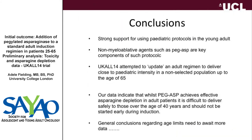In conclusion, there's clearly very strong support for using paediatric protocols in young adults. Non-myeloablative agents such as pegylated asparaginase are key components of those protocols. In UCAL-14, we attempted to update our protocol to deliver a paediatric-style regimen to a non-selected adult population up to age 65. Our data show that although pegylated asparaginase achieves effective asparagine depletion, it's very difficult to deliver safely over the age of 40 years, and starting it early in induction is not the way to go — we need to get people over the myelosuppressive agents first. General conclusions about age limits will come as the trial reports further.